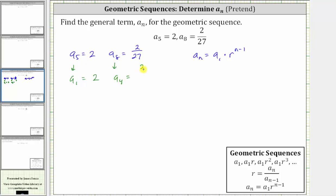So temporarily, we will let a_1 equal 2 and a_4 equal 2/27, which will allow us to find the common ratio r, and then we'll come back and find the real a_1.